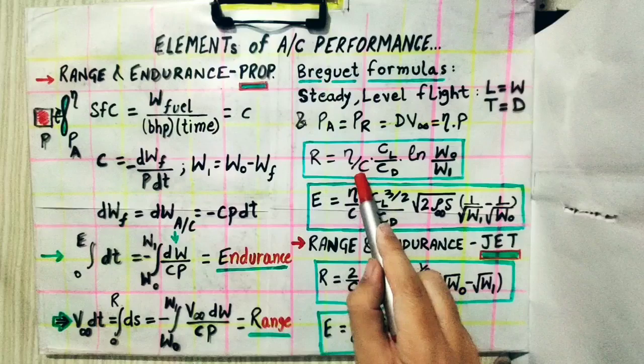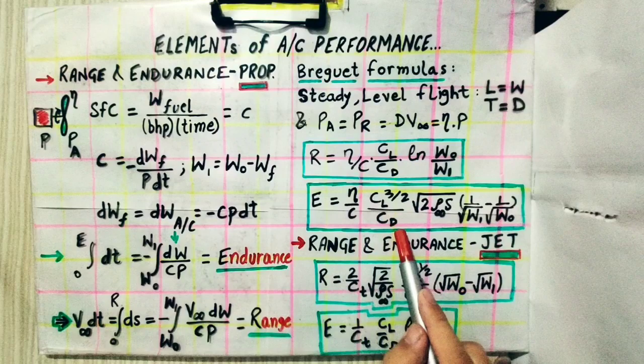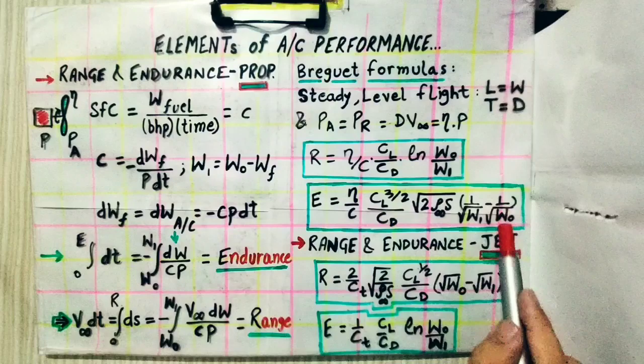The range formula for a propeller-driven aircraft is: R = (η/C) × (C_L/C_D) × ln(W₀/W₁). The endurance formula is: E = (η/C) × (C_L^(3/2)/C_D) × √(2·ρ∞·S) × (1/√W₁ − 1/√W₀).